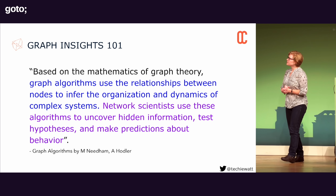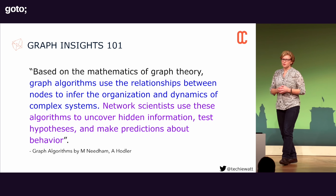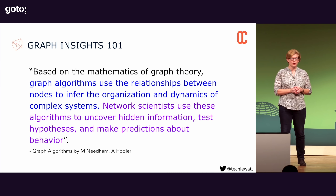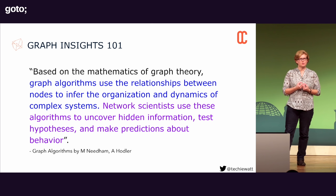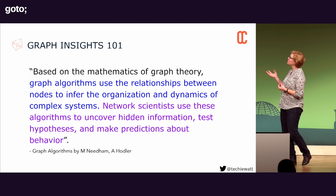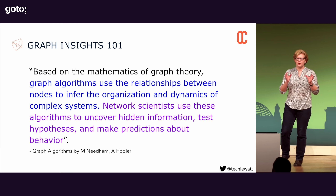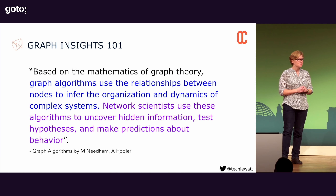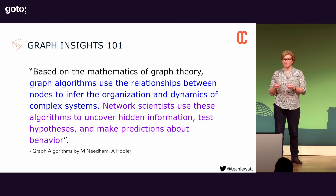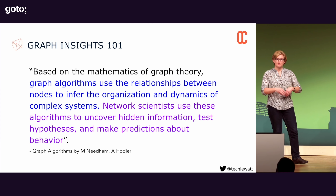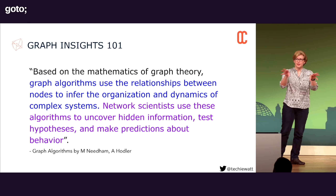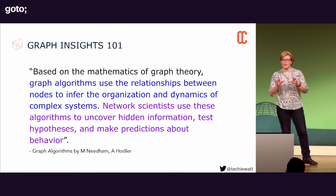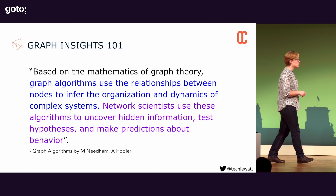Graph theory is based on maths, and the algorithms use the relationships between nodes to infer the organization and dynamics of complex systems. Network science takes the graph and the algorithms and uses them to uncover hidden information, make predictions, and test hypotheses — and that's what we're going to be doing moving forward.